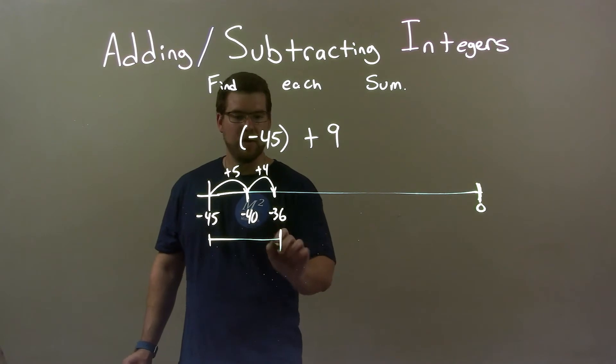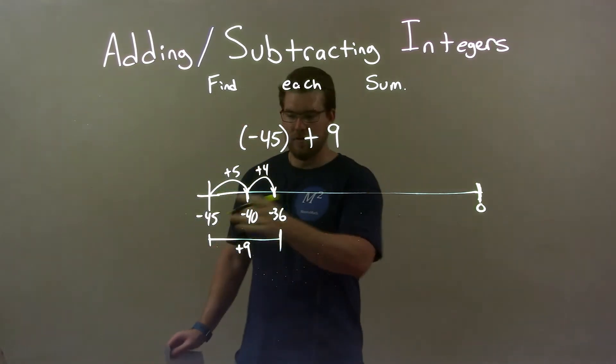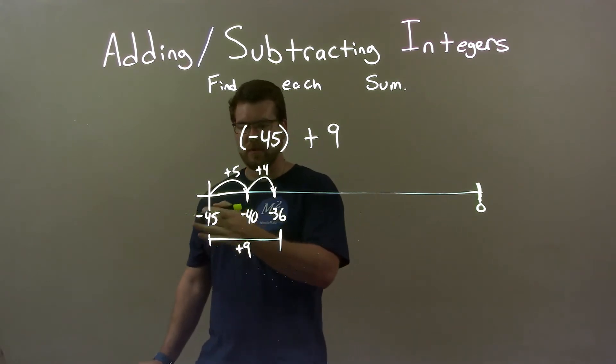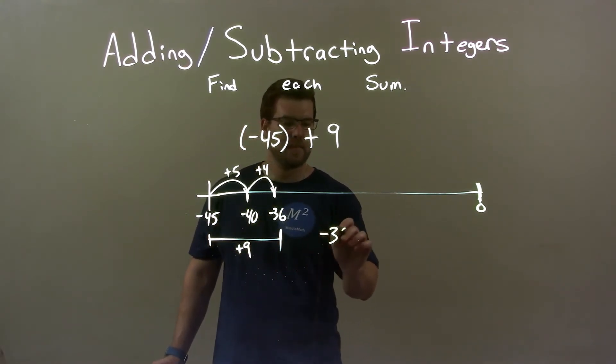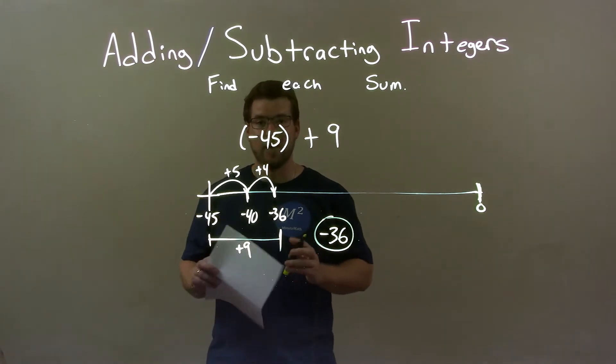Because we can see here that 5 plus 4 is a plus 9, total of adding 9 units to the right there. So negative 45 plus 9 is a negative 36. And that is our final answer.